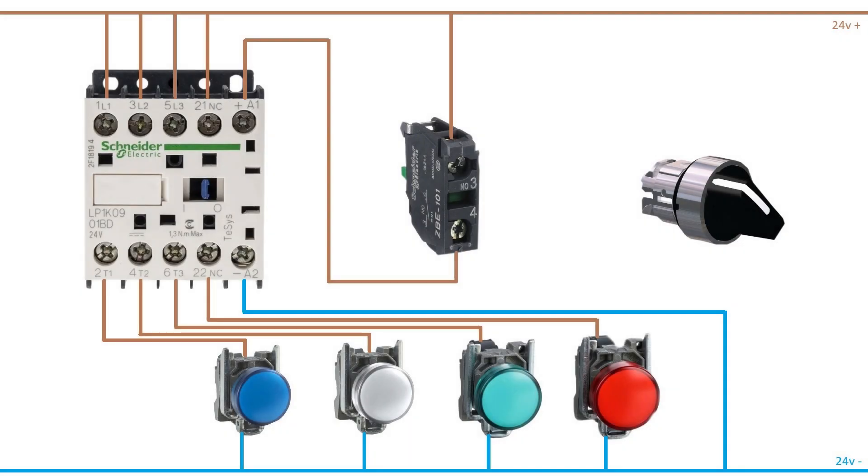I will demonstrate a contactor wired like this, with just 24 voltage to a couple of lamps. And I will put a switch to the normally open contact block. It will be used to trigger the coil.